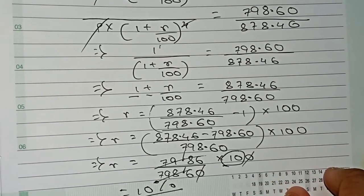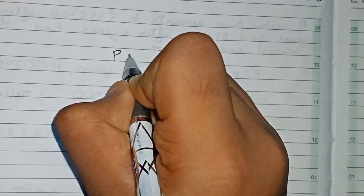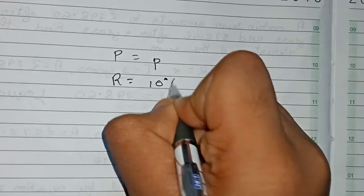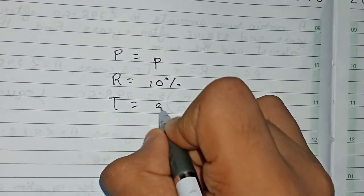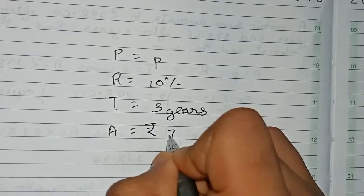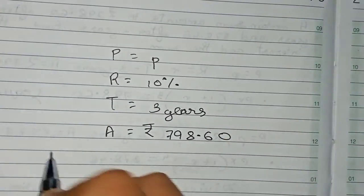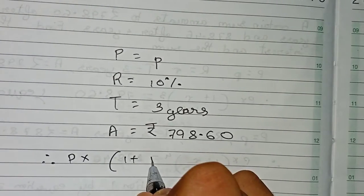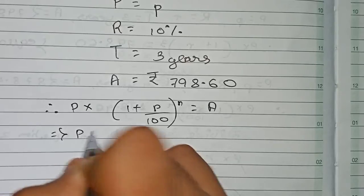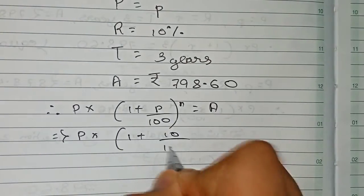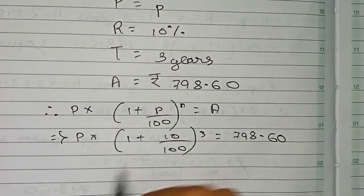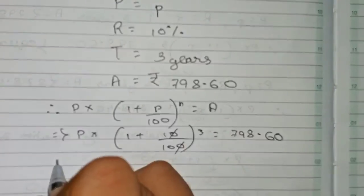Now we find the principal. Using r equals 10 percent and the three-year equation where the amount is rupees 798.60, the formula is P into (1 + r/100) to the power n equals amount. Substituting, it becomes P into (1 + 10/100) to the power 3, which is P into (11/10) to the power 3, equals 798.60.